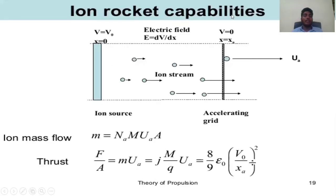Ion rocket calculation: V = V₀ at x = 0; V = 0 at x = xA. Electric field E = dV/dx. Ion streams UA. Ion source accelerating grid: mass flow rate Ṁ = n·A·m·uA·A. Thrust: F/A = Ṁ·uA = (J·m/Q)·uA = (8/9)·(2·V₀/xA)^(1/2).